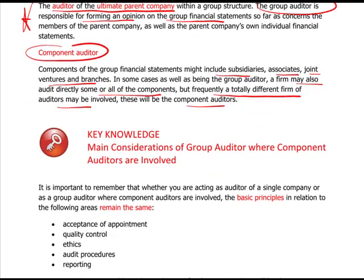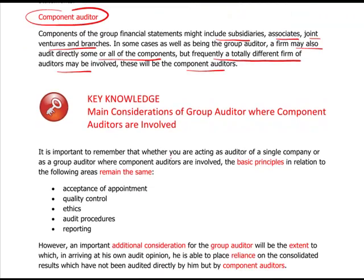The main considerations of a group auditor, where component auditors are involved: you are acting as auditor of a single company or as group auditor — the basic principles are the same. You accept your appointment of the group. Your quality control is maintained for doing the group. You keep a high standard of ethics, and your audit procedures you follow as if it were a single entity, many times over. Your reporting audit report is the same — the financial statements, balance sheet — just they become a little bit more complicated because they are a group. You have to place reliance on someone else who has provided work into your group consolidated accounts, but a component auditor has done so.